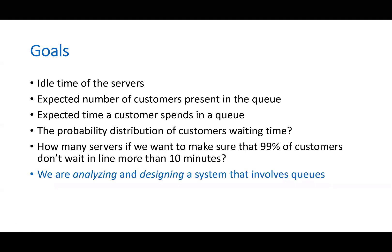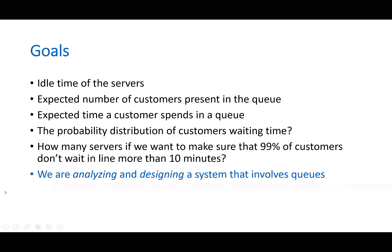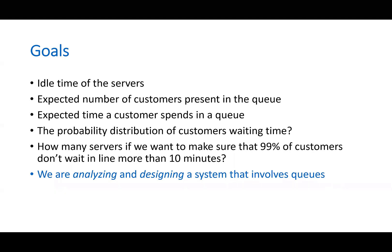In a queuing system, we are doing two things. One, we are analyzing an existing queuing system by answering these questions or finding these values — we call this operation characterization; we are characterizing the operations. We are also designing a system: when you say how many servers there should be, how many checkout lines there should be, you're basically designing the system. So we're going to look at queues from both perspectives.